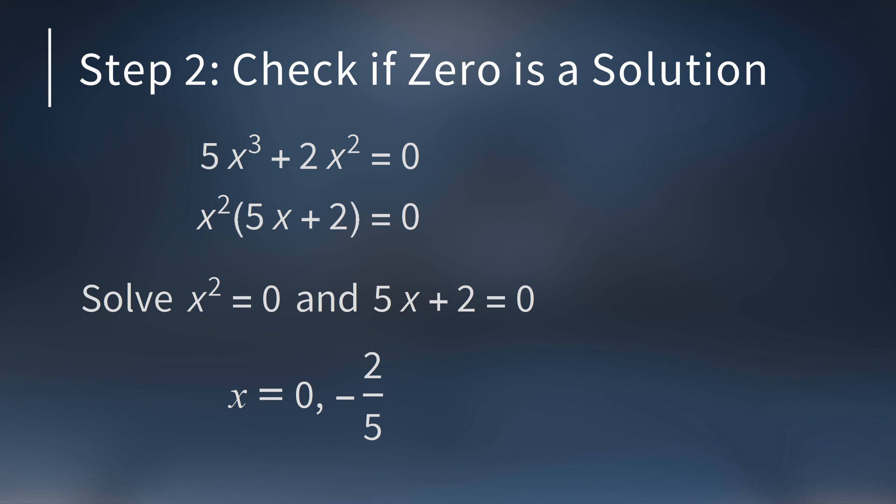Once we do this, we see the solutions are 0 and negative 2 fifths. So this Diophantine equation does have an integer solution: 0. Quick note: when solving a Diophantine equation, sometimes you'll want to find all fraction solutions and not just the integer solutions. In that case, we did just find all the rational solutions. But today we're focused on finding the whole number solutions.